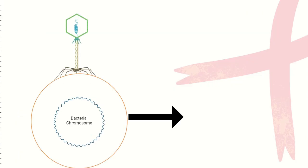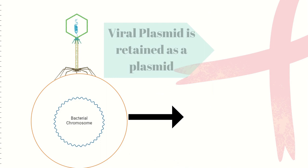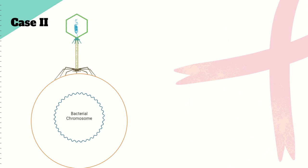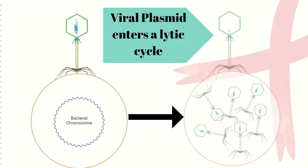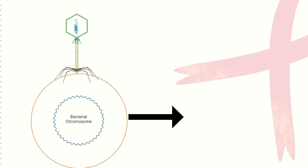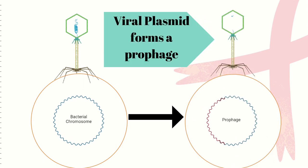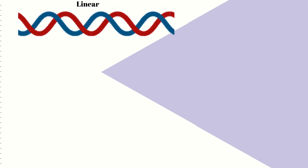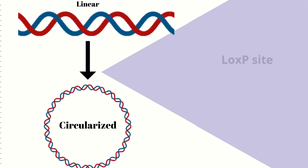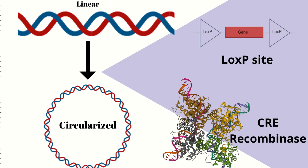Once the virus infects a cell, the viral genome will undergo one of three fates. First, the viral genome will enter the host cell and be retained as a viral plasmid. Second, the viral genome enters a lytic cycle, reproducing viral particles that will eventually cause lysis of the cell. And lastly, the viral genome upon entering the host cell will integrate with the host genome to form a prophage. In all three cases, the linear viral genome upon entering the cell circularizes — a product of LOX P sites and Cre recombinase enzyme encoded by the P1 bacteriophage.